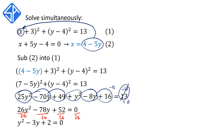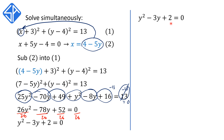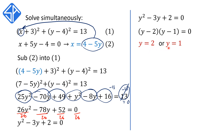To solve y squared minus 3y plus 2 equals 0, we're going to use the factorization method. We want to find two numbers that multiply to give 2 and add to give negative 3. Those two numbers are negative 2 and negative 1, since negative 2 times negative 1 is positive 2 and negative 2 plus negative 1 is negative 3. So this factorizes to y minus 2 times y minus 1 equals 0, giving us y equals 2 or y equals 1.